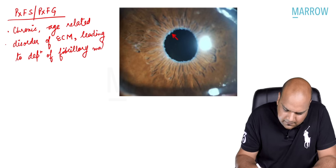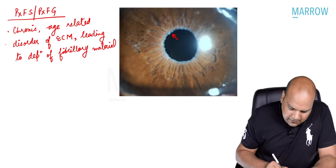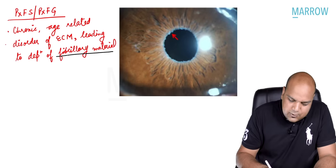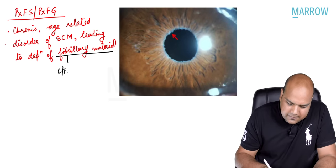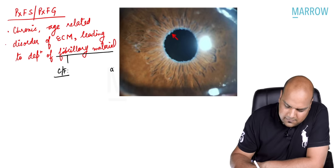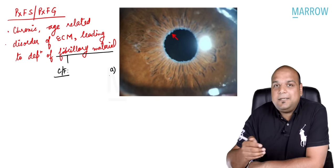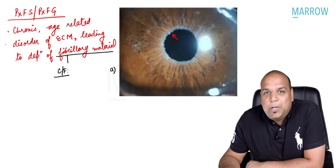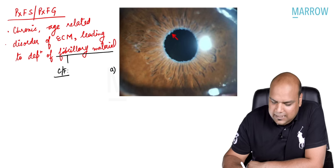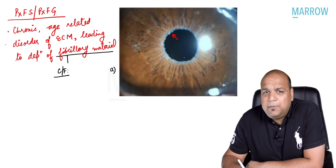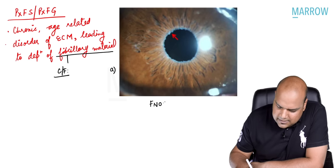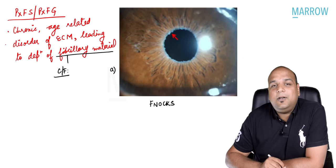Pseudo-exfoliation syndrome is a chronic, age-related disorder of the extracellular matrix which leads to deposition of fibrillary material. Wherever this fibrillary material gets deposited, it leads to clinical features. The most characteristic clinical feature is the target sign on the lens. Another image that can come is the fibrillary material deposited at the pupillary margin, known as SNOX or NOX.